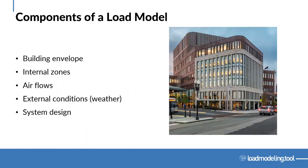Components of a load model. First, we'll have the building envelope — all of the glazing, exterior walls, the roof, all those elements. Then the internal zones: if we're looking at a whole building, we might have hundreds of zones; if we're looking at just one room, we have one zone. But those zones are part of our load model.